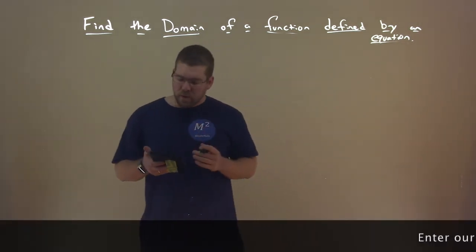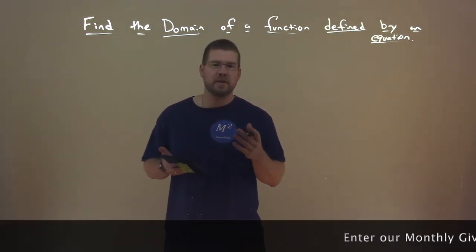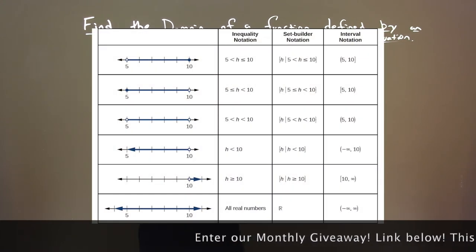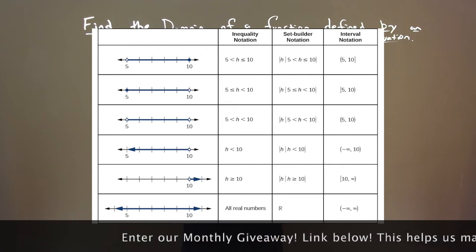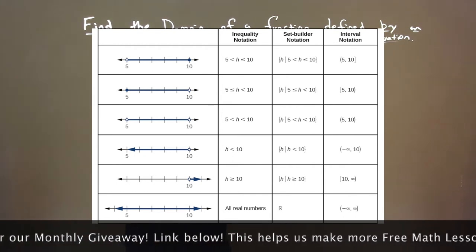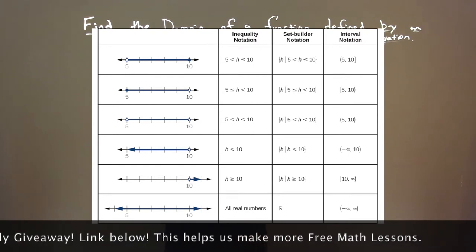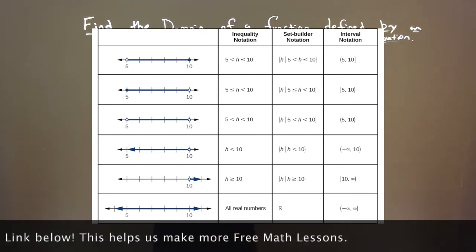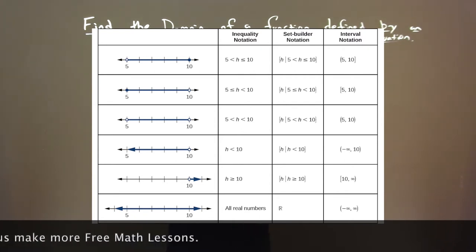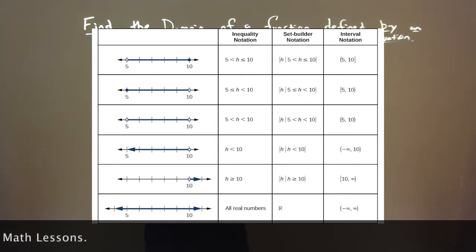Now we're going to use notation to specify domain and range. Let's look at this table. Notice the first entry: we have from 5 to 10, where 5 is less than H, which is less than or equal to 10. Notice the graph: we have an open circle at 5 and a closed circle at 10.